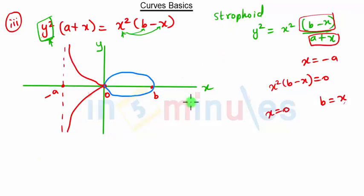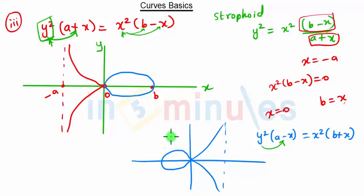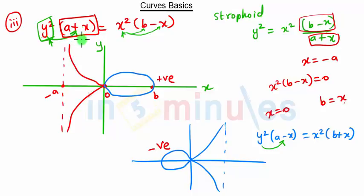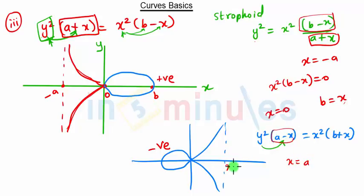This curve is known as a strophoid. It can take different forms. From the equation, whatever term is with y² determines whether our loop is on the positive side or the negative side of the x-axis. Here we have 'a plus x' with y², and we get the asymptote here. The curve starts from there, and when we put y equal to 0, we get the loop.